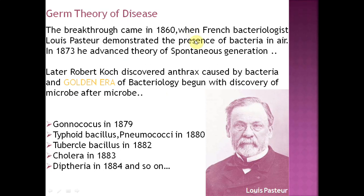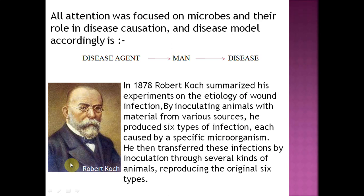One of the first theories with scientific evidence was germ theory. It started when French bacteriologist Louis Pasteur found out the presence of bacteria in air. Then Robert Koch came into the limelight of bacteriology — this is known as the golden era of bacteriology. He found out that anthrax was caused by a bacteria, and after that many bacteria were discovered: gonococcus, typhus, cholera, diphtheria.